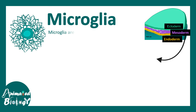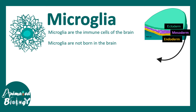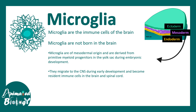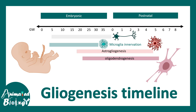Now let's talk about microglia — the immune cells inside the brain. Microglia have a diverse set of functions. They are not generated in the brain; they are generated from primitive myeloid progenitors present in the yolk sac during embryonic development and migrate to innervate the brain early on. Looking at the developmental timeline, microglial innervation of the brain happens at around gestational week 5 and continues until around week 30.